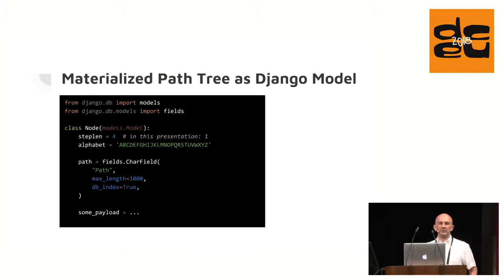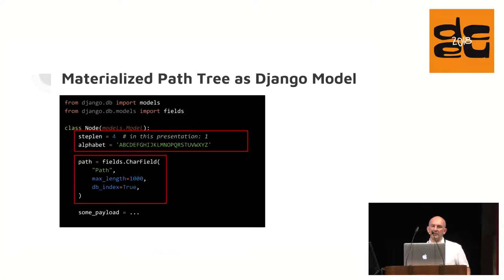Here we create a Django model for our node. Instead of a foreign key onto self, we use an indexed char field named path. In that field we store an encoded position of our node inside the tree. By default, Django Treebeard uses a step length of four with an alphabet of 36 characters. This allows each node to have a maximum of about 1.6 million immediate children. But in the next slides, for simplicity, I use a step length of 1 with an alphabet of 26 characters.